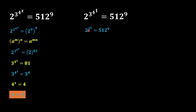Now we solve 3^4 = 81. So we have 2^81, and the other part of the equation remains the same. We know that 81 can be written as 9 × 9, and the other part of the equation remains the same.